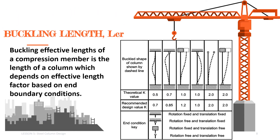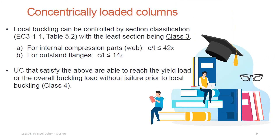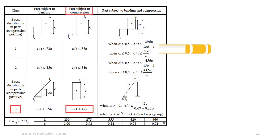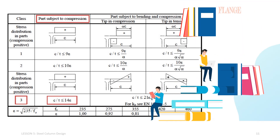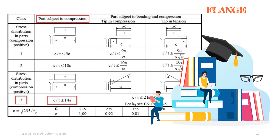The buckling effective length of a compression member is the length of a column which depends on the effective length factor based on end boundary conditions. The table shows the column effective length factors for Euler's critical load. In practical design, it is recommended to increase the factors as shown in the table. K is referred to as the effective length factor based on end boundary conditions. Local buckling can be controlled by section classification, with the least section being class 3 and able to reach overall buckling without failure prior to local buckling — class 4. One table is used to classify the web when the part is subject to compression, whereas another table is used to classify the flange when the part is subject to compression.